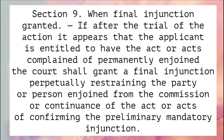Section 9. When Final Injunction Granted. If after the trial of the action it appears that the applicant is entitled to have the act or acts complained of permanently enjoined, the court shall grant a final injunction perpetually restraining the party or person enjoined from the commission or continuance of the act or acts, or confirming the preliminary mandatory injunction.